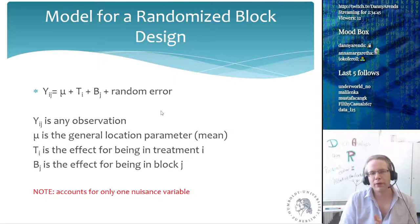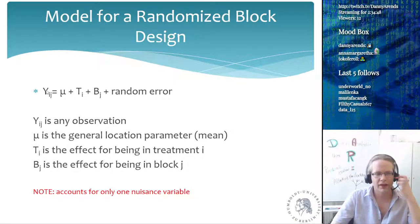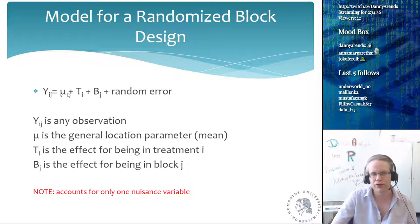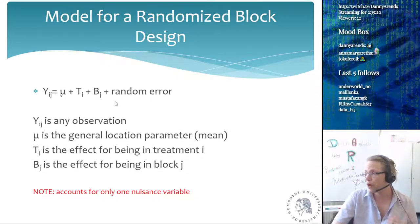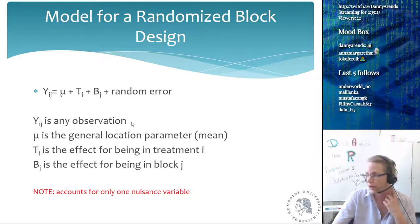The model for a randomized block design looks like this: y_ij equals mu — the global mean or general location parameter — plus t_i, the effect of the treatment, plus the effect of being in block j, plus some random error. This accounts for one nuisance variable, though we could add multiple block terms if needed. We still have to randomize within the blocks. This is the general model used to analyze block designs.